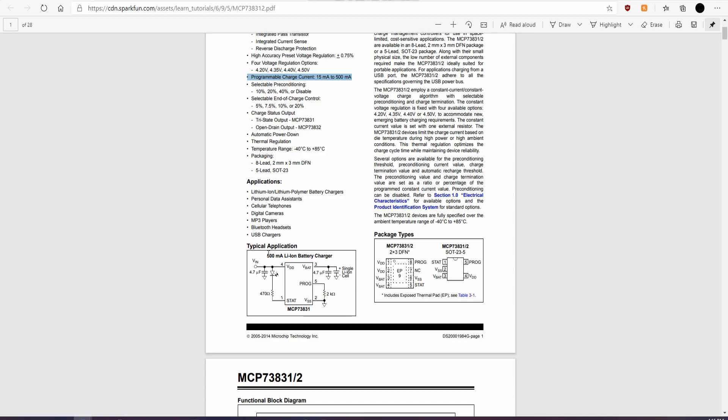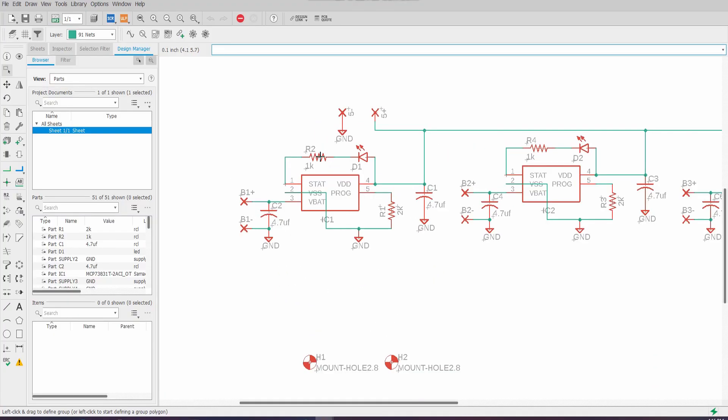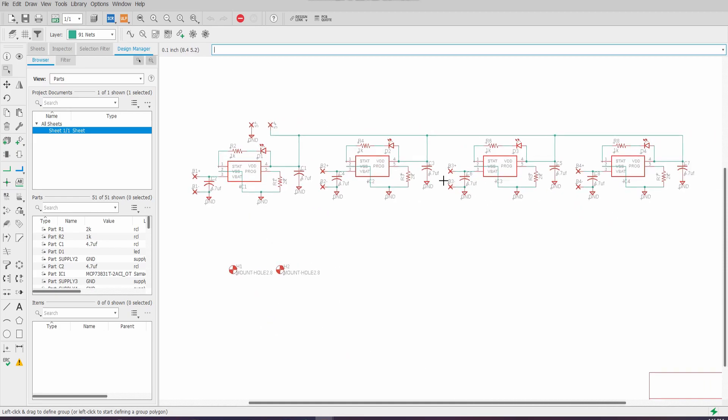If we look at the typical application, we will see that they're showing the 500 milliamp application, which is what I'll be using. So this exact circuit right here is what I took and just imported into Eagle, essentially. We can look at the schematic and see that we have pretty much the same circuit setup there, except four of them for four 18650 cells.